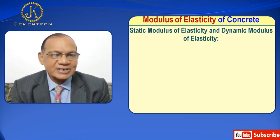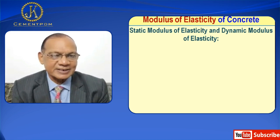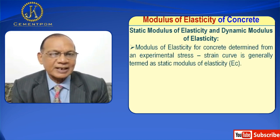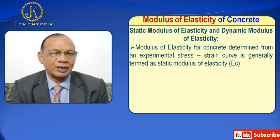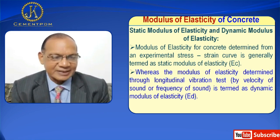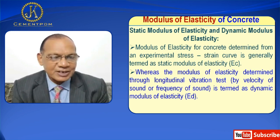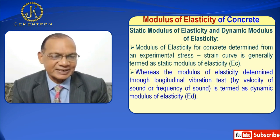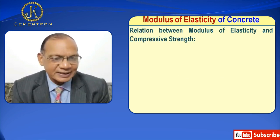Now I will discuss static modulus of elasticity and dynamic modulus of elasticity. Modulus of elasticity for concrete determined from an experimental stress-strain curve is generally termed as static modulus of elasticity, Ec. Whereas the modulus of elasticity determined through longitudinal vibration test — that is, by velocity or frequency of sound — is termed as dynamic modulus of elasticity, Ed.